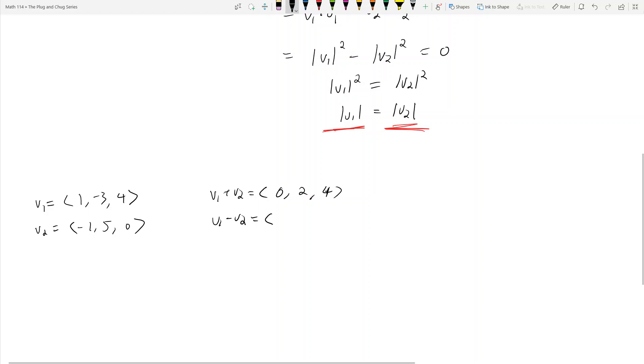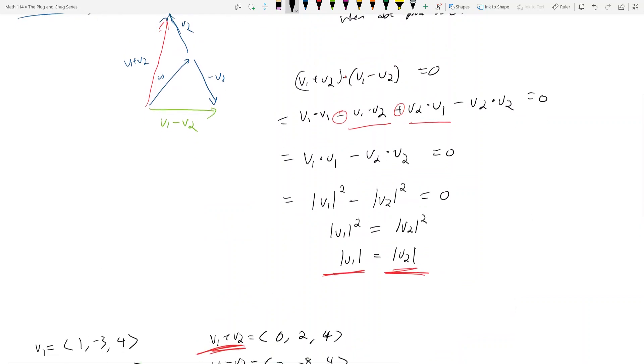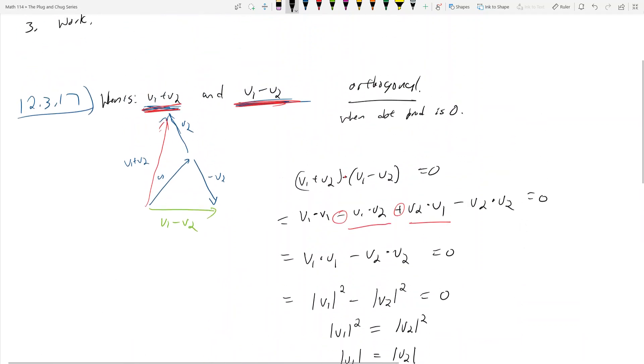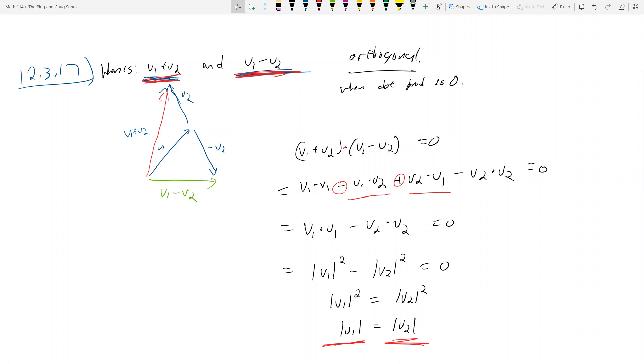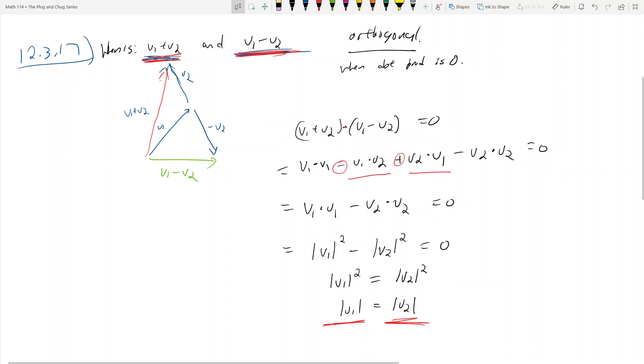What's V1 plus V2? That equals 0, 2, 4. V1 minus V2 equals 2, negative 8, 4. What is this guy dotted with the bottom guy? That's 0, 2, 4 dotted with 2, negative 8, 4, and we see this is 0 minus 16 plus 16, which is 0. Down here is a numerical example and up here is the abstract example on when V1 plus V2 and V1 minus V2 are orthogonal.